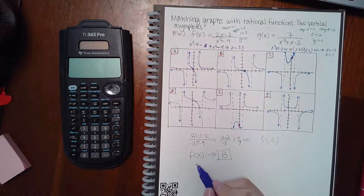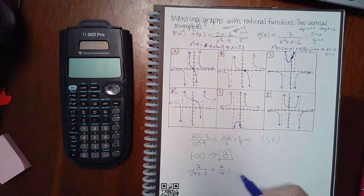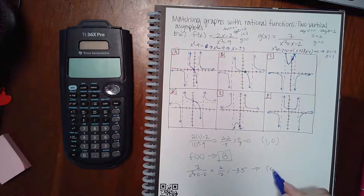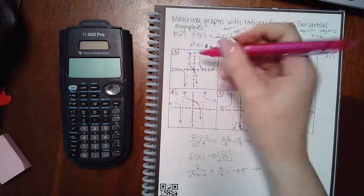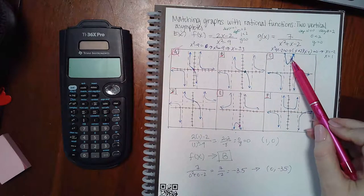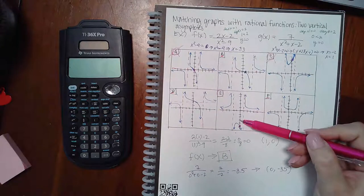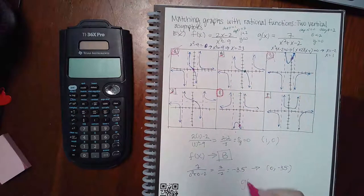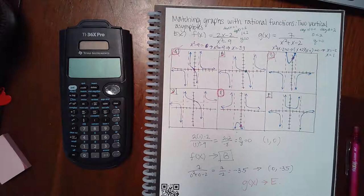g(0) = 7 over (0² + 0 - 2) = 7 over negative 2 = negative 3.5. The point is (0, -3.5). Graph A has (0, 0) — not a match. Graph C has zero with a positive y-value — not a match. Graph E gives a negative value at x = 0, so the answer for g(x) is E.